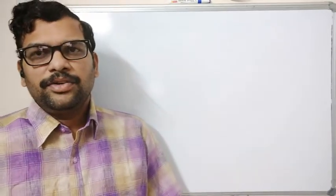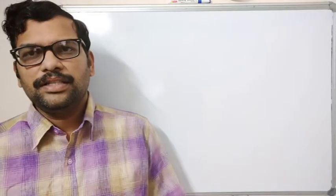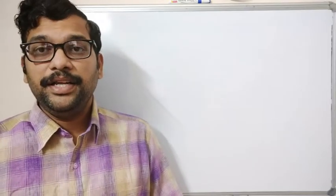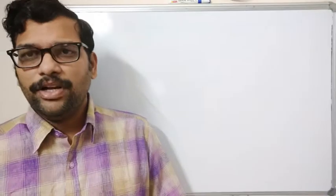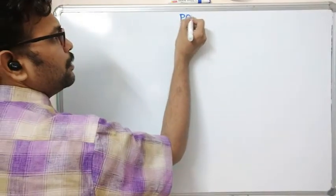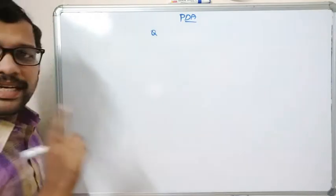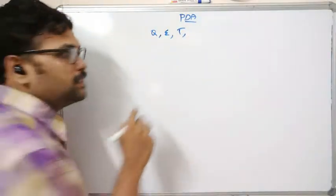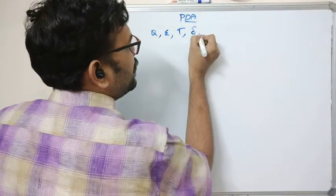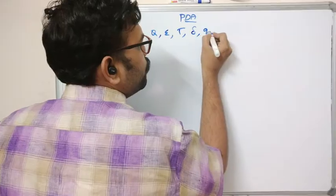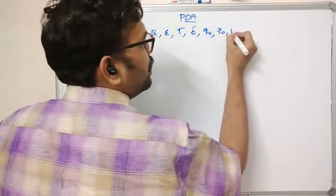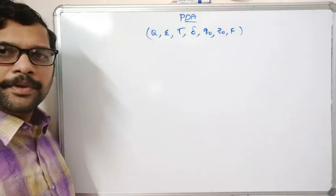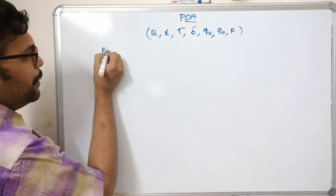Hello friends, welcome back to our channel. In today's session we'll discuss how to construct a PDA. In the previous session we discussed the definition of PDA, which is defined as a seven-tuple consisting of Q (number of states), sigma (input alphabet), gamma (stack symbols), delta (transition function), q₀ (initial state), z₀ (top of the stack), and F (final state). We need to represent all seven tuples for a PDA.